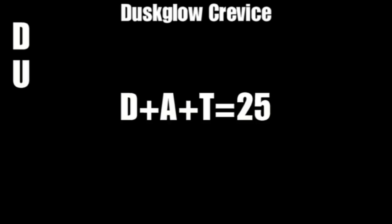We have DU, Duskglow Crevice. D, A, and T is 25. 2 plus 5 is 7. 7 is G. So, I guess that just means that I'm right, Duskglow.